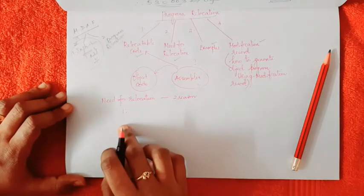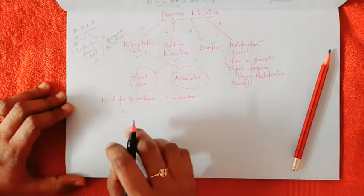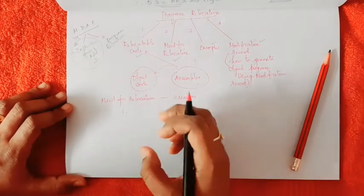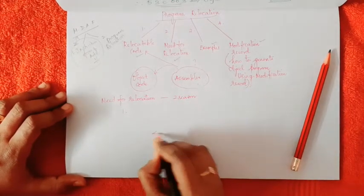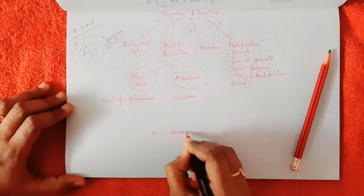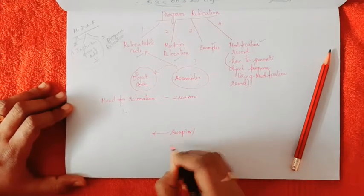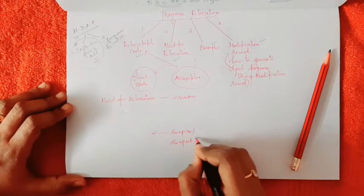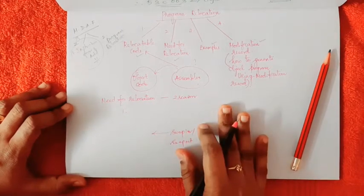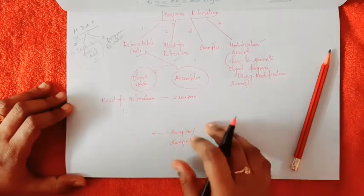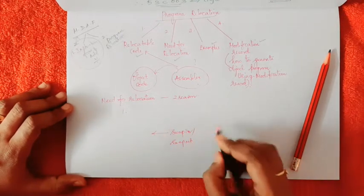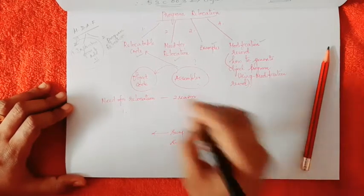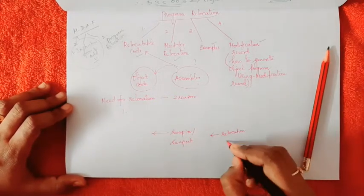The second reason is when the machine's memory is not large enough to support many programs, there comes swap in and swap out. The programs need not be in the same memory location when they are swapping, and so relocation is needed. These are the two reasons why we go for relocation.